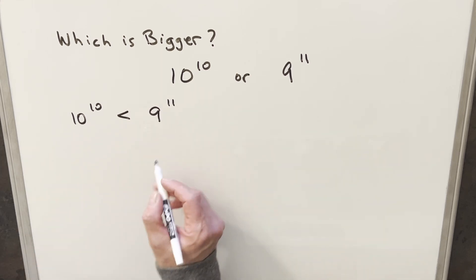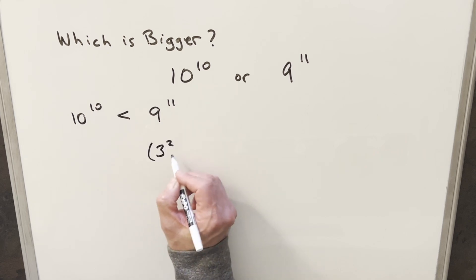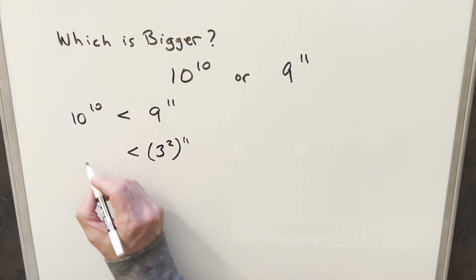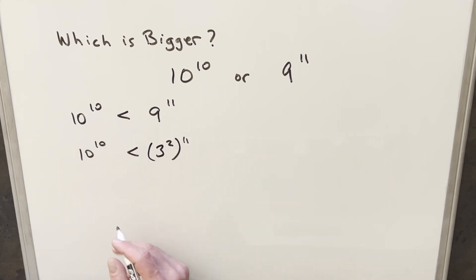Then from here what I want to do is take 9, and I can write this as 3 squared, and this is all going to be to the 11th, and we'll have 10 to the 10 on the left side.